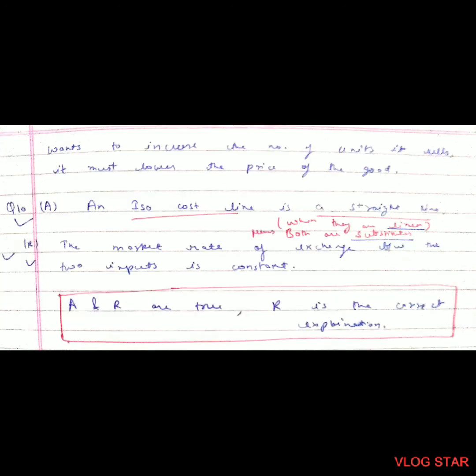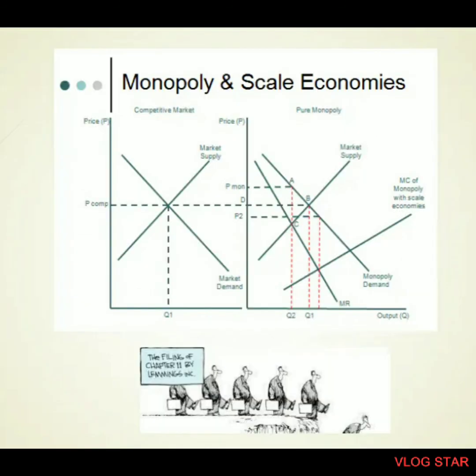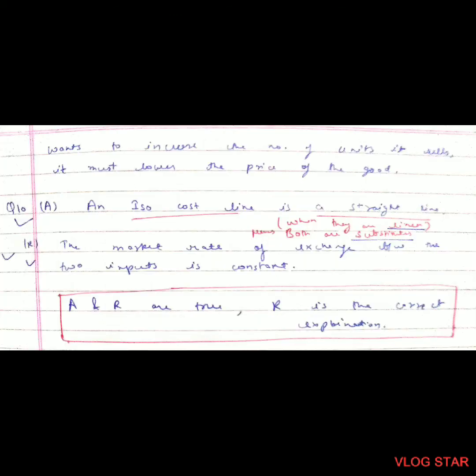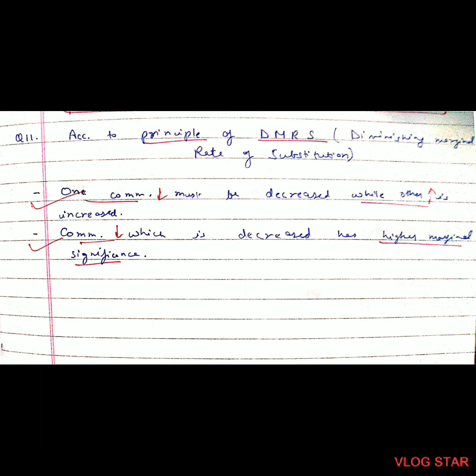Question 10: Assertion-Reason — Assertion: An isocost line is a straight line. Reason: The market rate of exchange between the two inputs is constant. Both assertion and reason are correct, and the reason is the correct explanation of the assertion. The isocost line is a straight line when inputs are linear, meaning both inputs are substitutes for each other.